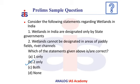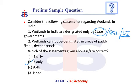Wetlands in India can be designated not only by the state government but also by the Government of India — i.e., the central government — or the administration in the case of a Union Territory. As per the rules of the Ministry of Environment, Forest and Climate Change, wetlands cannot be designated in areas of paddy fields, river channels, etc.